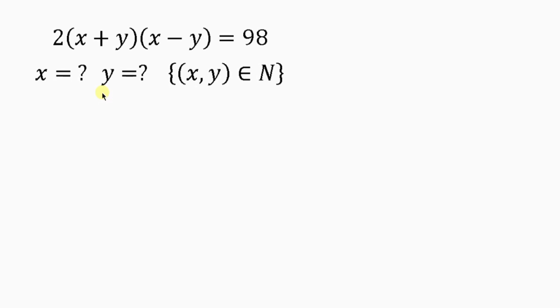Now we have this nice and beautiful Olympiad question on the board which says 2(x+y)(x-y) = 98. And we are told to look for the value of x and the value of y. But take note of what we have in this curly bracket. It says x and y are elements of natural numbers.